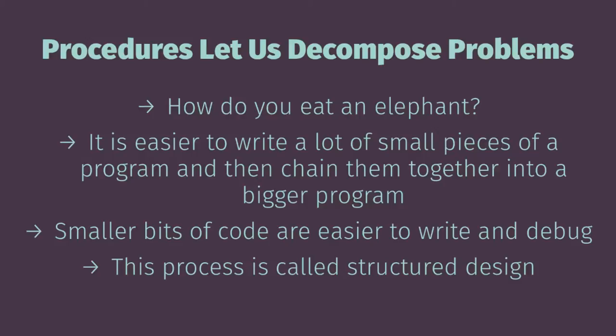By tackling small pieces of your program and chaining those small pieces together into a bigger program, it makes it easier to write software, easier to debug, and easier to think through. Instead of asking "how do I write an ATM machine?", you could think: how do I accept a user's PIN number? Once you write that code, you ask: how do I verify that the PIN number is valid? You might find you need to break those pieces down further, like I was discussing with the peanut butter and jelly sandwich — higher-level instructions work for a human but might need more granularity for a robot.